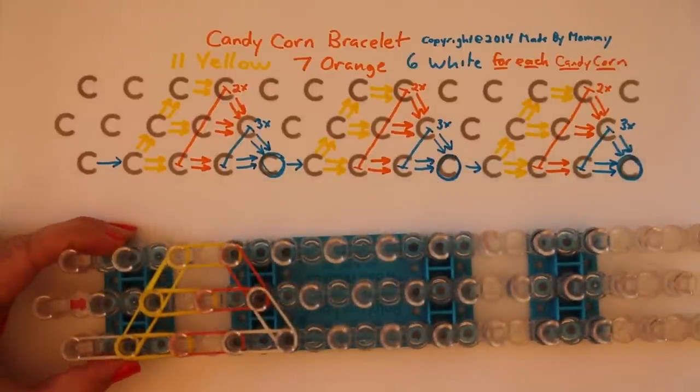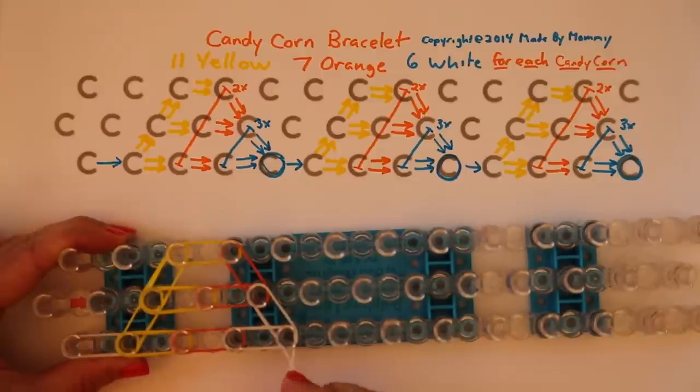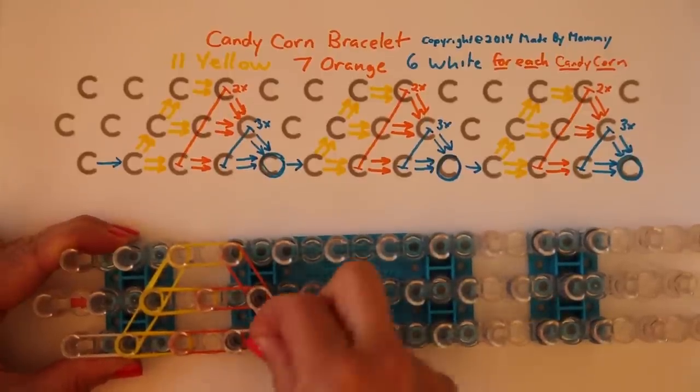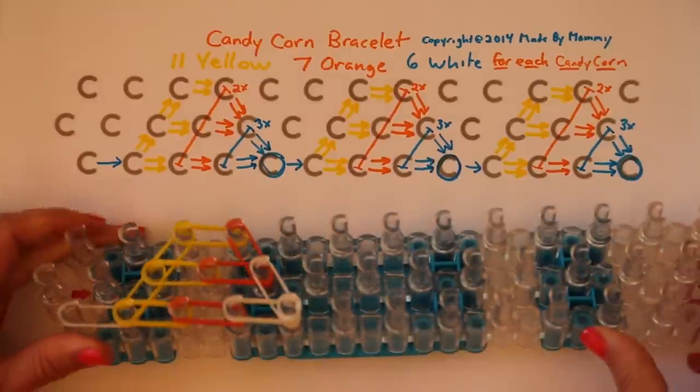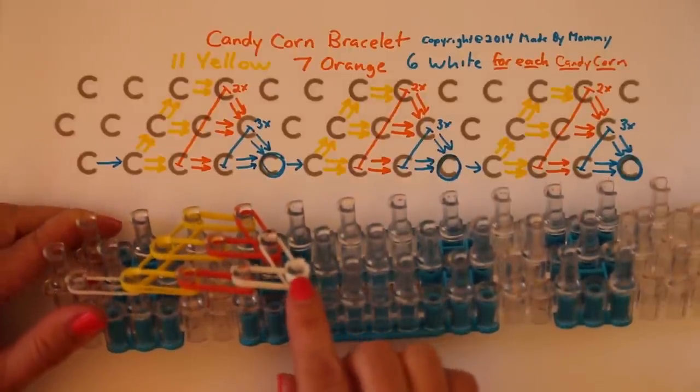Then you want to place a single cap band wrapped around this peg three times if you can. Depends on the brand of your rubber bands, but for the Rainbow Loom Brand Opaque, three works well.